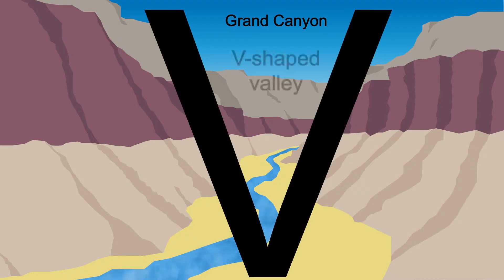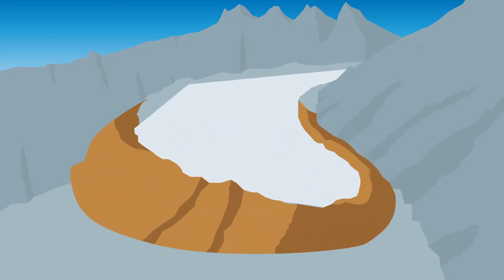Glaciers can cause erosion in similar ways. High down from the mountains, they flow down slowly but with enormous power. The valleys formed by glaciers often have a flatter pattern, which means they are called U-shaped valleys.